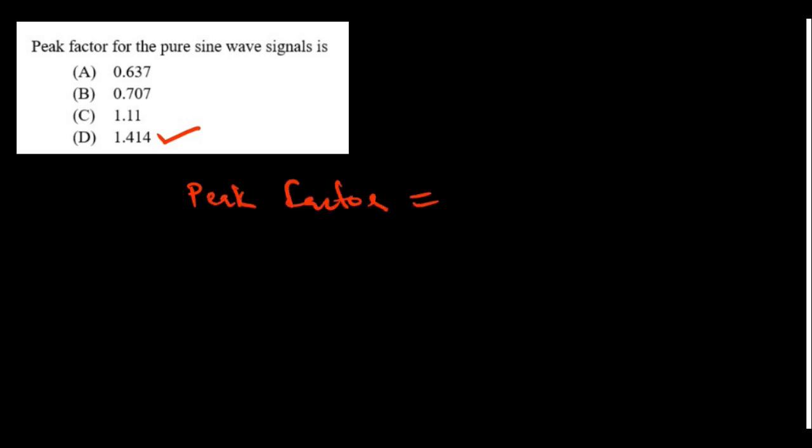The peak factor of a pure sine wave is given by V_peak divided by V_RMS, which equals 1.414.